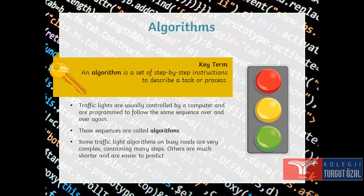Think about traffic lights. Do you think that there is an algorithm or instructions to be followed? Of course there is. Traffic lights are always controlled by a computer and are programmed to follow the same sequences over and over again. These sequences are called algorithms.